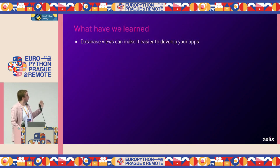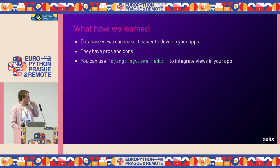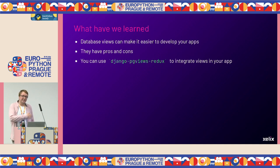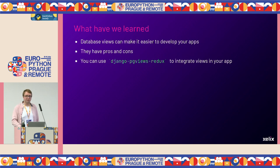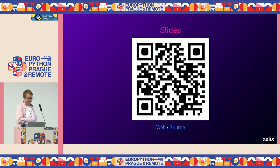To summarize: you can use database views to make it easier to develop your apps. They have pros and cons like everything in life. If you want to use database views in Postgres with Django, check out the library Django PG Views Redux. If you need extra features — there are a bunch I haven't mentioned — come and talk to me after if you have more ideas or just want to chat about database views. Thank you very much.